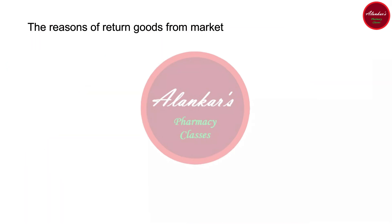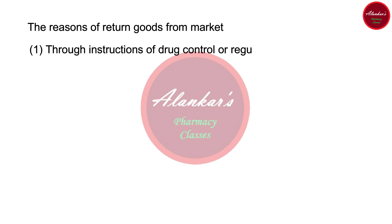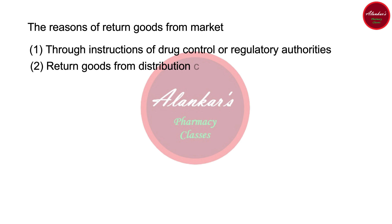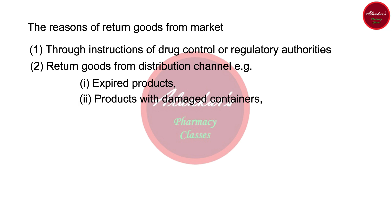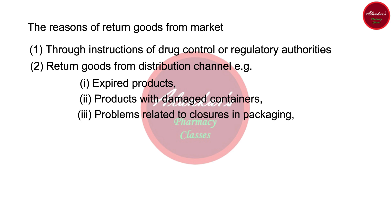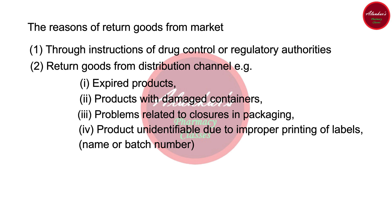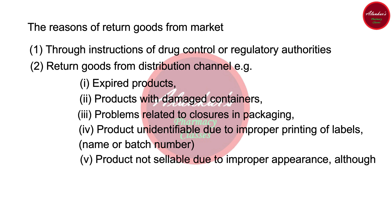There are many reasons for returned goods from the market. Goods may be returned because of the instructions of drug control or regulatory authorities. Other than these, goods may be returned from the distribution channel — for example, cases of expired products, products with damaged containers, problems related to closures in packing, or products that are unidentifiable due to improper printing of labels — for example, where the name or batch number is not printed properly.